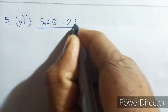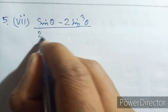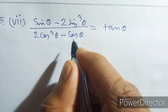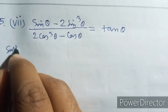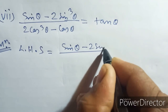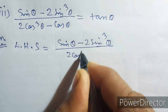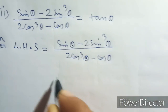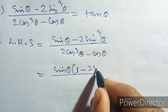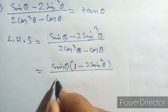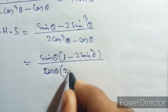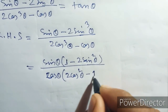Next: sin theta minus 2 sin cubed theta by 2 cos cubed theta minus cos theta equal tan theta. Solution: left hand side equal sin theta minus 2 sin cubed theta over 2 cos cubed theta minus cos theta. Equal sin theta times 1 minus 2 sin squared theta, then 2 cos theta common gives 2 cos squared theta minus 1.